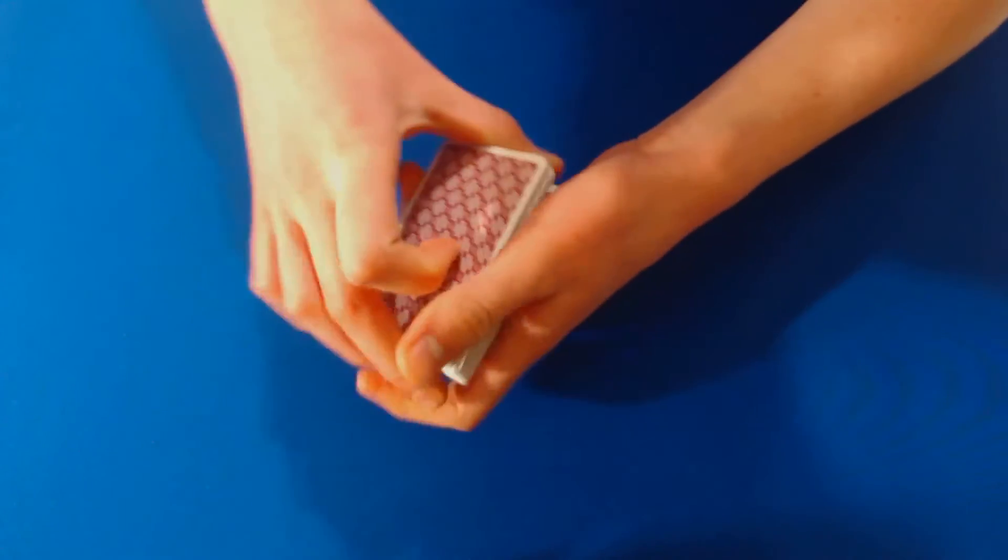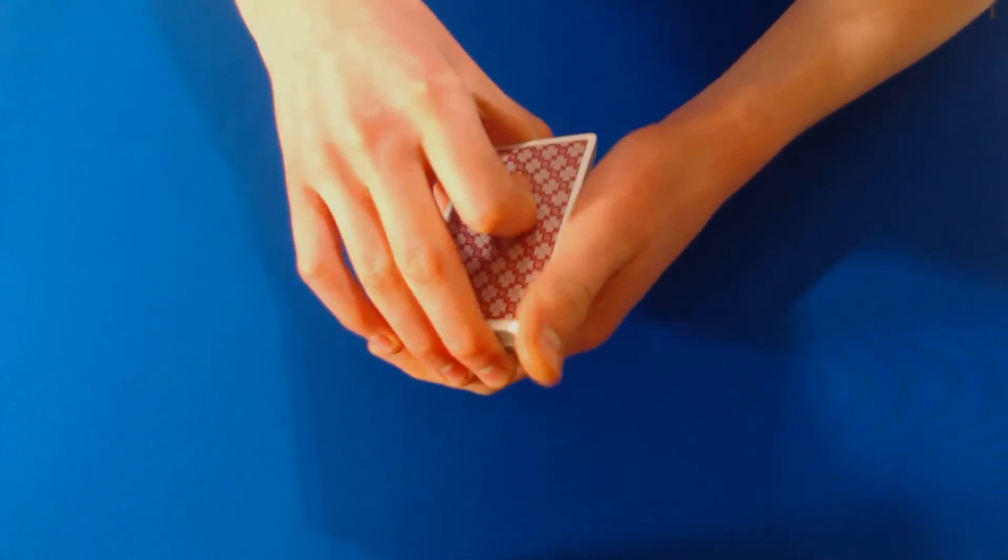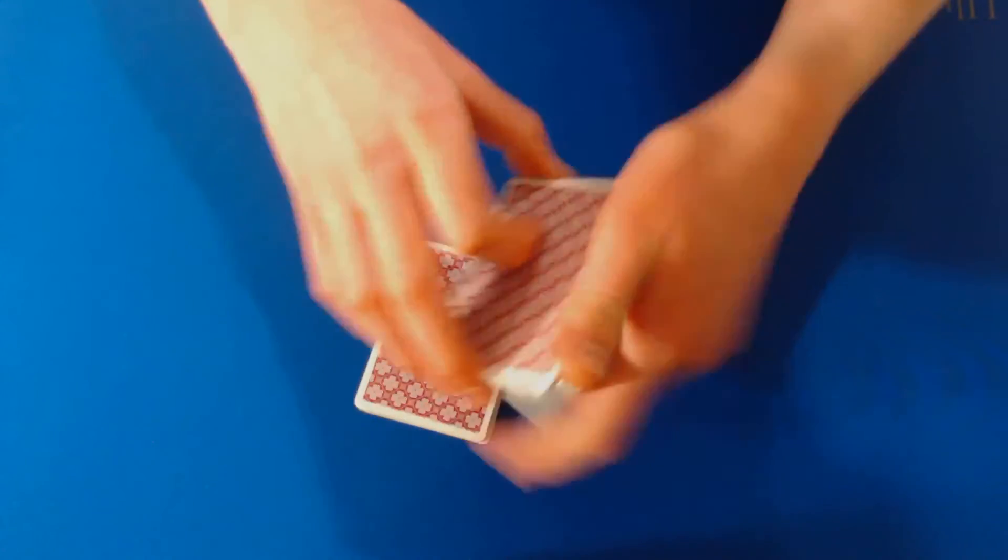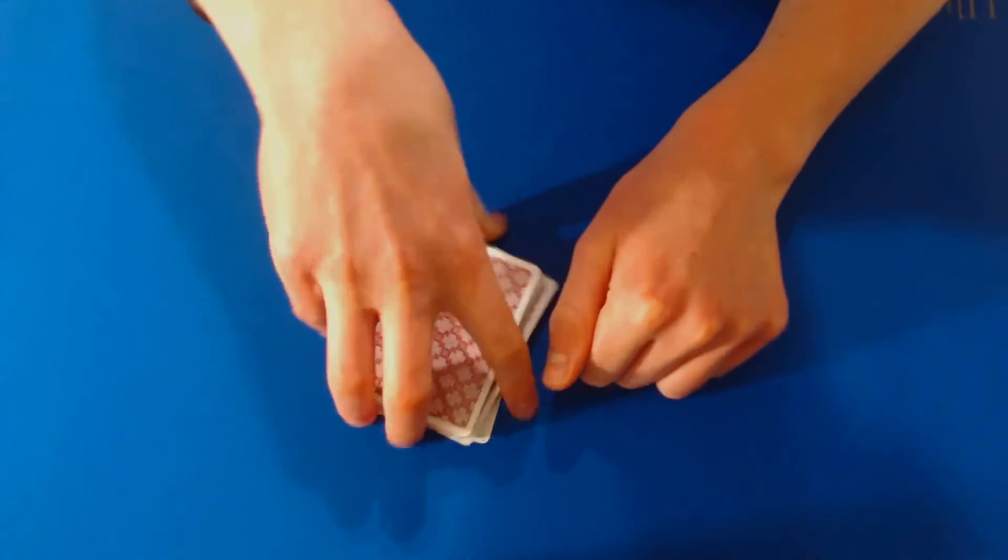Okay, because the thumb break is right above the eight of spades. You have that thumb break there, transfer that to a pinky break, and then just cut a couple of times down to your pinky break.